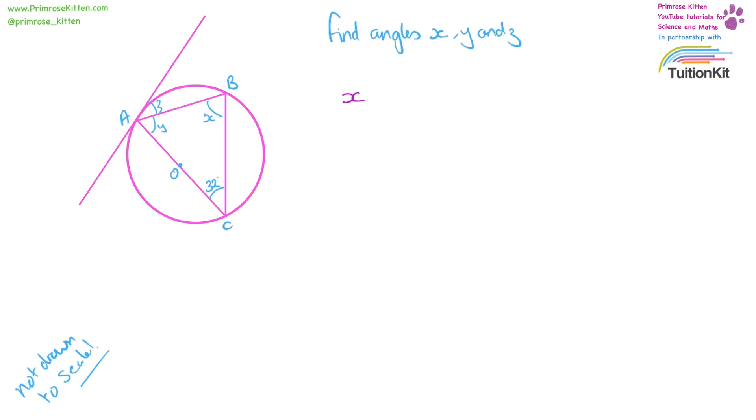So x, because this is a triangle that goes through the centre, this is not drawn to scale, and these two are at the edge, x is going to be 90.